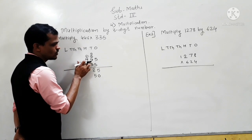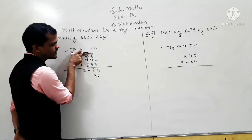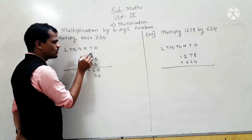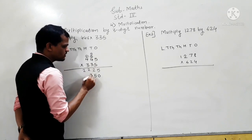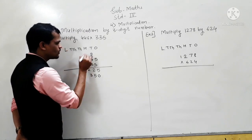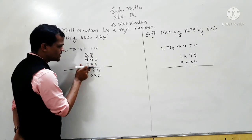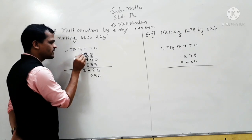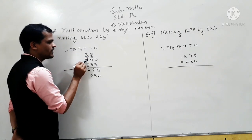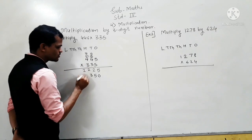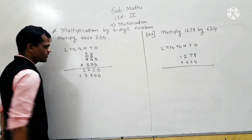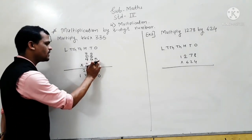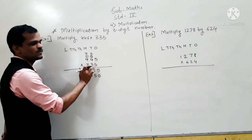Then, 3 fours are 12. Add the carry: 3 fours are 12, 12 plus 1 is 13 — write 3 here and carry 1. Now, 3 multiplied by 4: 3 fours are 12, 12 plus this 1 carry is 13 — write 3 here and carry 1. Write 1 here. So this is the product when you multiply 425 by 30.